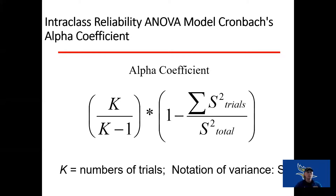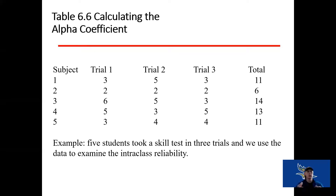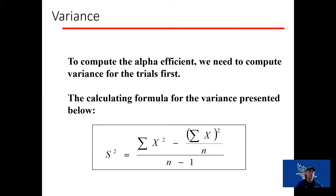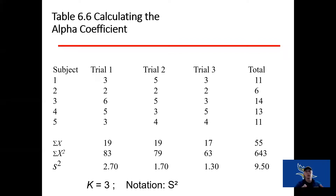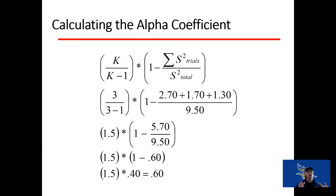We use the Cronbach's alpha coefficient to assess this. K is our number of trials multiplied by the variance between those trials. Say we have three different trials of a specific skill test and we want to know if we have a reliable test over multiple trials. We compute the alpha coefficient by looking at the variance of the scores and the variance between the scores — similar to how we would with an ANOVA. We take each of those trials, find their variance, and look at the ratio of trial variance to total variance to find reliability. In this example, the coefficient is lower than 0.8, so this is not a reliable test.